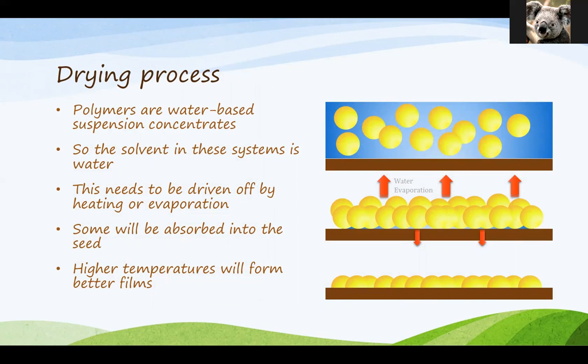Once the polymer is on the seed surface it then has to go through a drying process. In our case all our polymers are water based suspension concentrates which basically means the solvent that we use is just water and that needs to be driven off from the coated seed either by heating during the drying process or through evaporation. Some of that water can be absorbed into the seed itself although that's not the desirable outcome. Therefore drying is the best way to remove that water. It also helps form better films and we'll cover why that happens later, but it's worth noting that a drying step will give you an improved polymer coating.